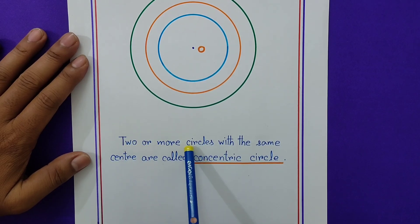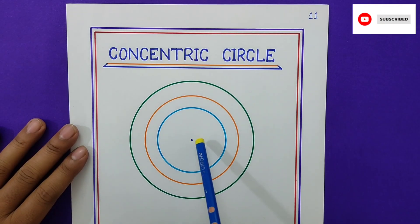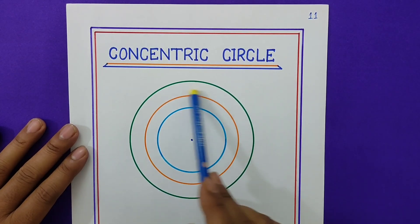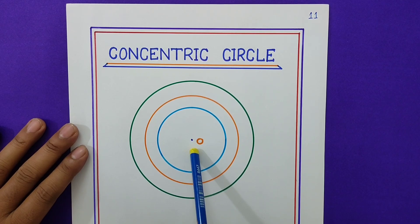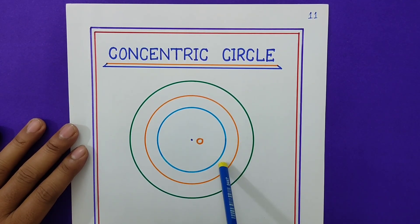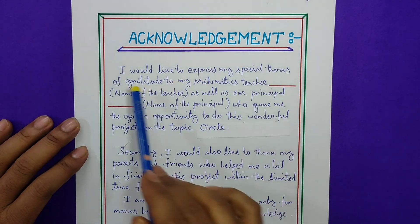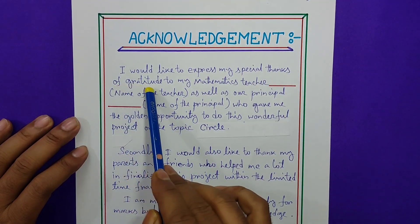Page number 11: concentric circles. Two or more circles with the same center are called concentric circles. You can see here there are three circles — blue, yellow, and green — and they have only one center, so these are called concentric circles.